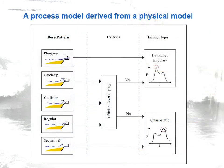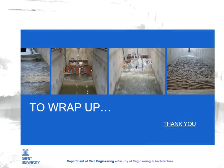With this kind of dataset we are able to come up with process models to link our wave patterns — or swash patterns as we call the broken wave — to certain impact types. This information is interesting when we design structures at the coast, to know whether we have to design in a dynamic or in a static way. To wrap up, physical models are used in coastal engineering to derive the process insights needed to create a safe living environment at the coast. Thank you very much.